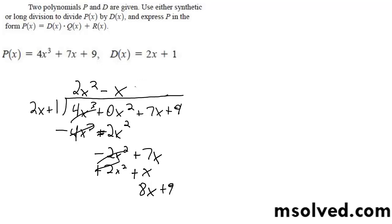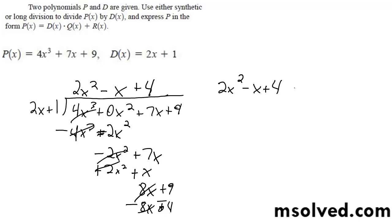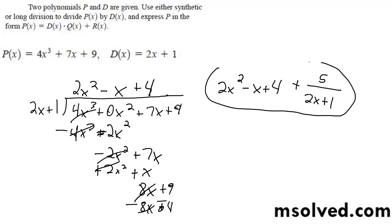So it goes into there plus 4 times. Cancels out. So we're left with 2x squared minus x plus 4, plus 5 over 2x plus 1. That's it.